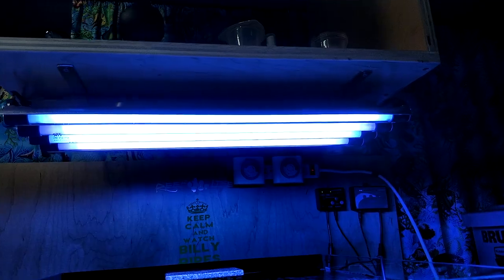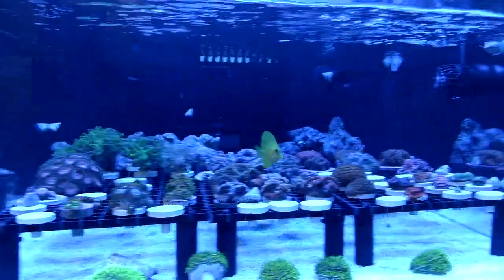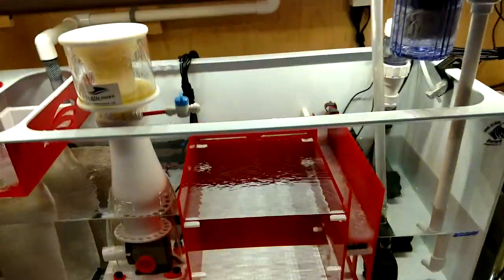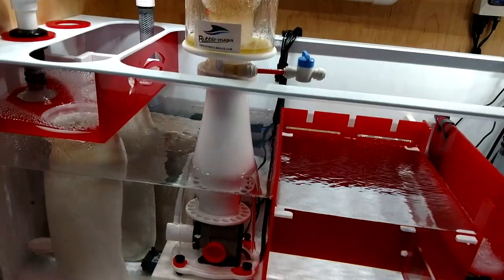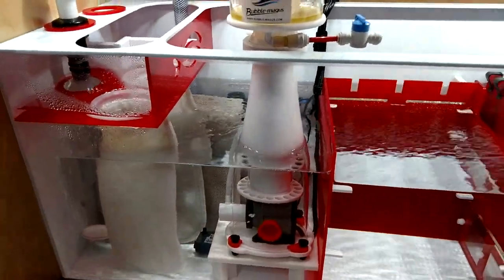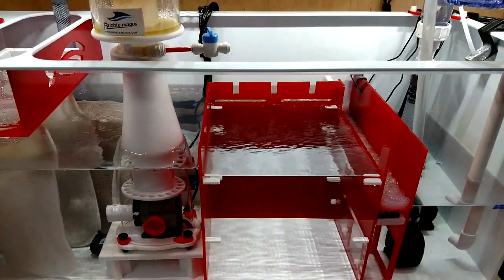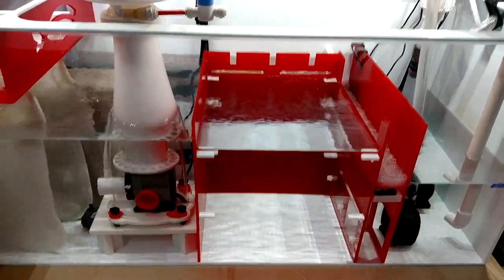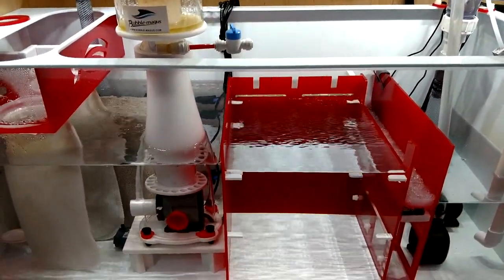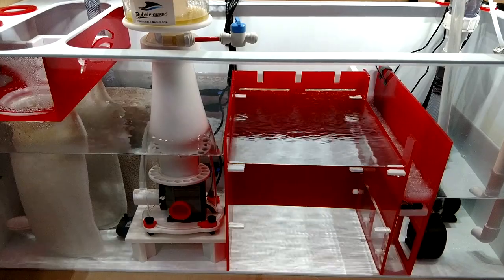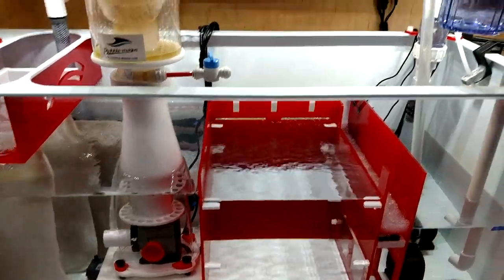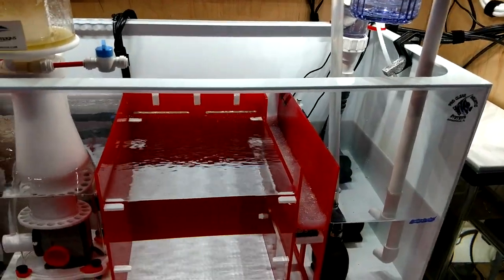So that's it for the lights, the power heads, and everything else. Now what we'll do is we'll go down below. Like I said before, this is the ProClear 4-in-1 sump. It's definitely oversized for this tank, but I already had plans on tying in another system down the road. We will look at the whole system.